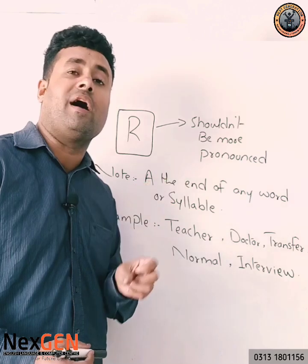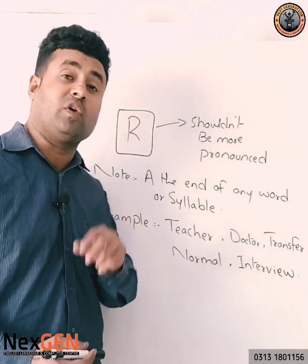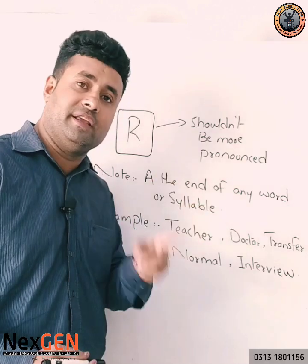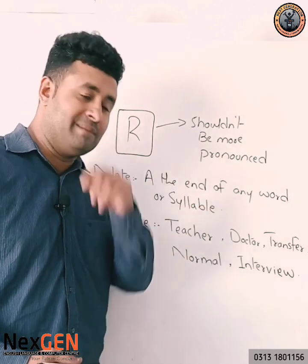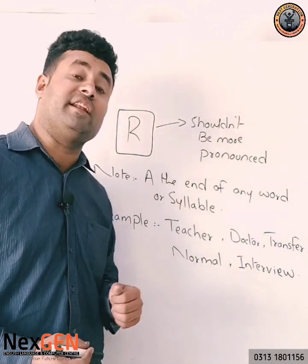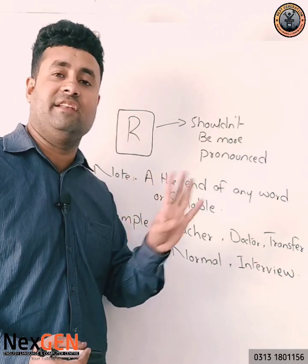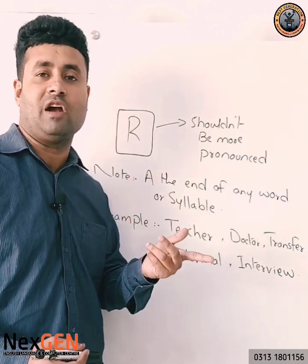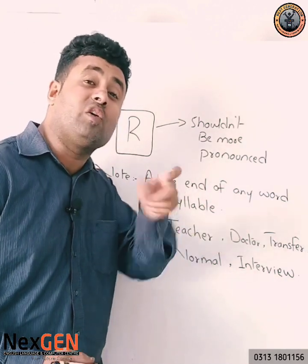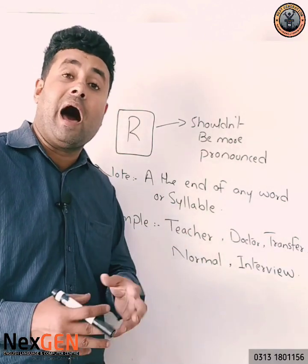A syllable is a unit of a word — like 'beautiful' has three syllables. 'Intelligent' — how many syllables? Four syllables. So when a word or syllable ends on R, we don't have to pronounce the R.